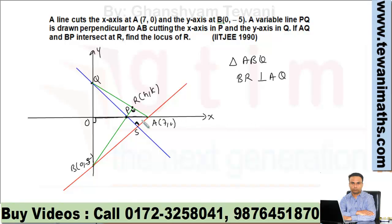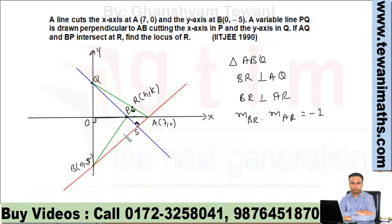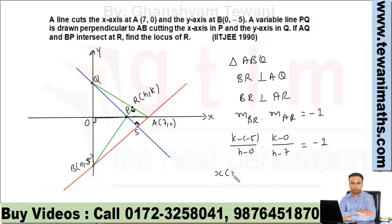Since this angle is 90°, whenever a 90° angle appears we use slopes. We have BR perpendicular to AR, which means slope of BR multiplied by slope of AR equals minus 1. The slope of BR is (k - (-5)) / (h - 0) and slope of AR is (k - 0) / (h - 7). Their product equals -1, simplifying to x(x - 7) + y(y + 5) = 0.